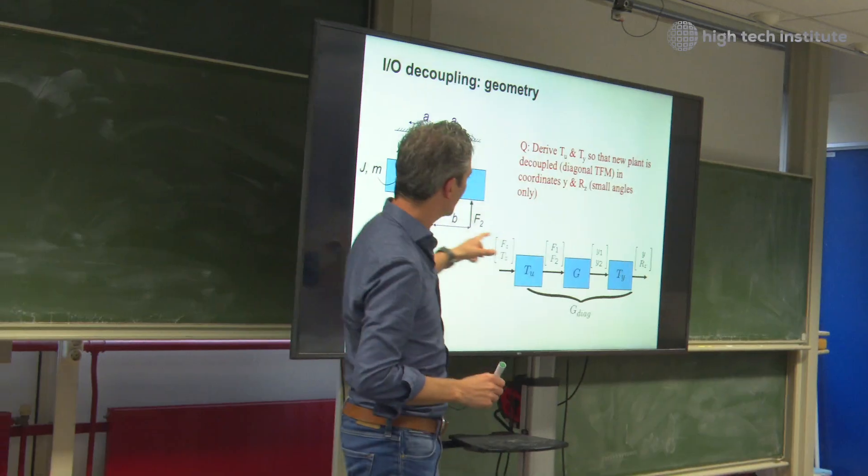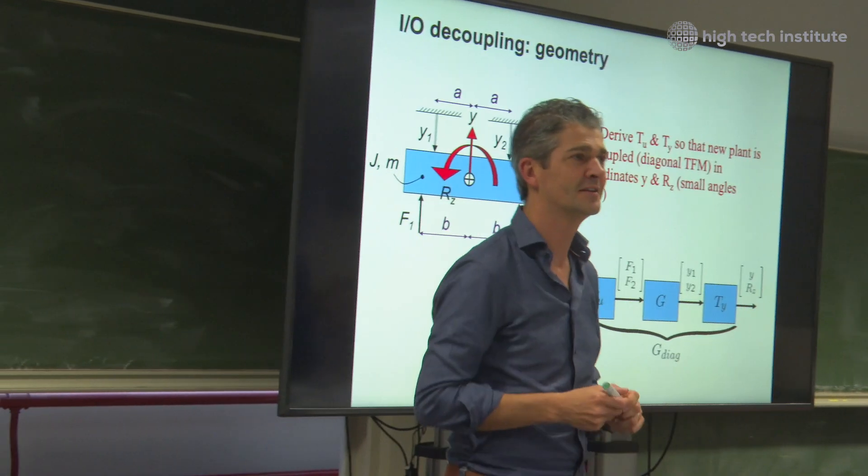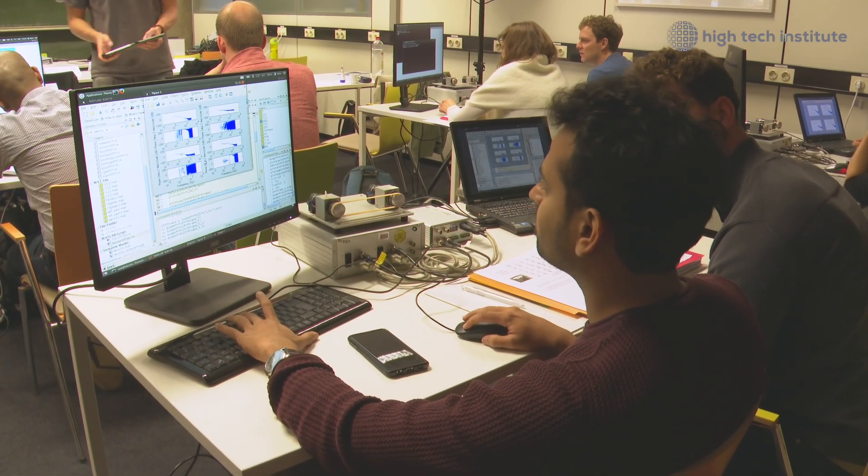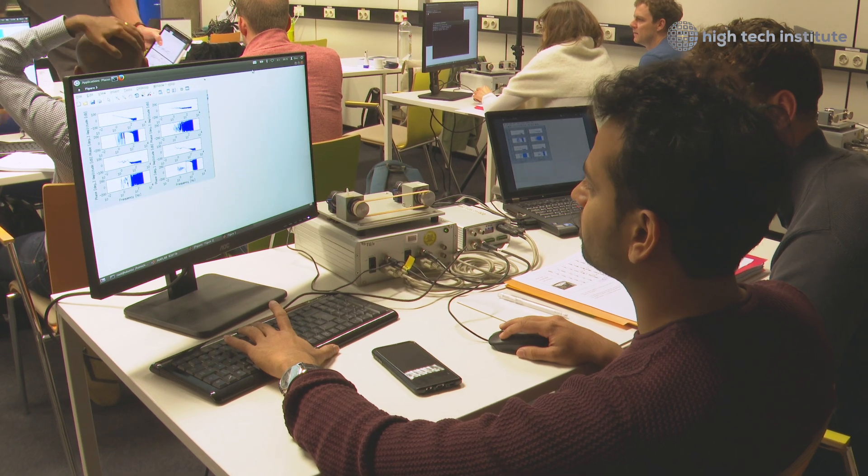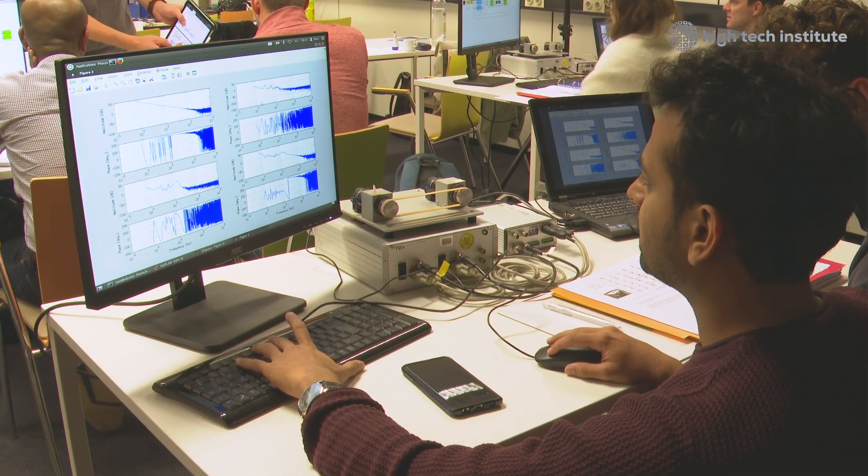The advanced motion control course covers five full days. Participants are expected to have either followed the motion control tuning course or have equivalent knowledge of single-input single-output controller tuning. On the first day, we briefly recap that knowledge and immediately apply it to multivariable systems. Participants quickly notice that interaction is the key challenge in multivariable feedback design. We also make the first step in identifying interaction terms using identification tools they are already familiar with.